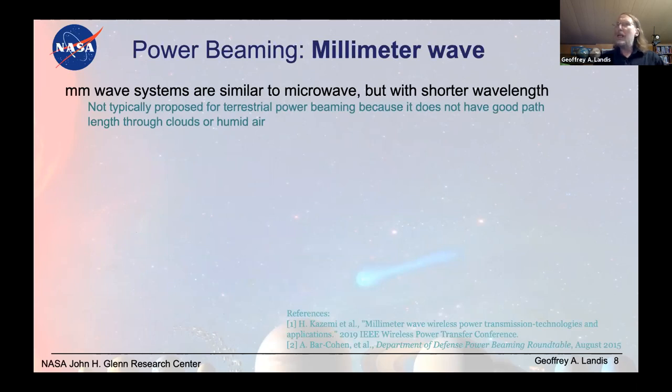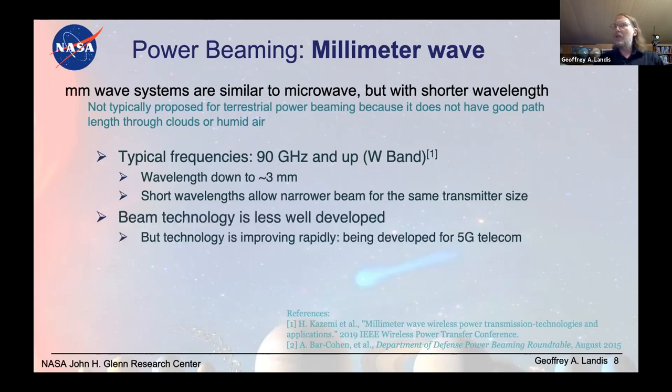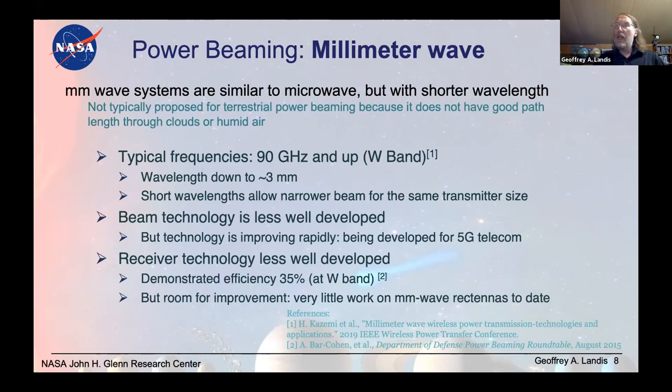Millimeter wave is sort of a hybrid between the two. It's shorter wavelength than microwaves, not as short as lasers. Hasn't been proposed very much for most of the power beaming applications, because it has poor path length through clouds or if the air is humid. So less people are looking at that, because a lot of people are looking at power beaming for Earth. But typical frequencies are in the W band, oh, 90 gigahertz or so. That gives you a wavelength down to maybe three millimeters. And the shorter wavelengths allow a narrower beam for the transmitter size. I'll look at that in a little more detail in a second. The beam technology is less well developed. There's not as much high power 90 gigahertz. But the technology is improving amazingly rapidly because it's being developed for the next generation telecom. Receiver technology likewise less well developed. I'm seeing efficiencies of about 35% at those W band frequencies. But there's a lot of room for improvement, just because so few people are looking at millimeter wave rectennas up to date.